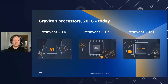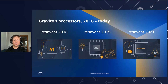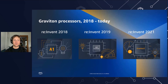Graviton 3 is the latest and greatest addition to the Graviton processor range. It's 25% faster than Graviton 2 for most general-purpose workloads, and for some workloads it's even faster than that — we've seen up to three times better performance for machine learning-based workloads. And that processor, the Graviton 3, is up to 60% more power efficient compared to equivalent x86 processors.